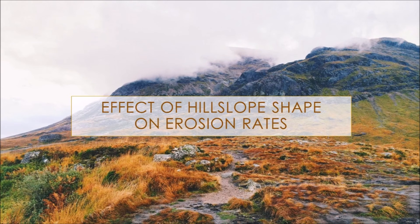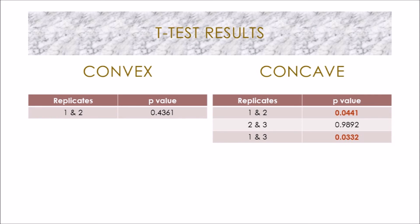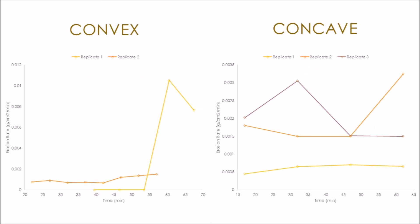Looking at the effect of hill slope shape on erosion rates, the t-test results show that the replicates for the convex slope were not significantly different from each other. However, for the concave slopes, replicate one is significantly different from the other two replicates. The data were quite inconclusive due to differences in times that samples were collected and differences in the number of samples per simulation. Despite this, the axes of both graphs show that convex slopes generally produce greater rates of erosion than concave slopes, thus supporting our hypothesis.